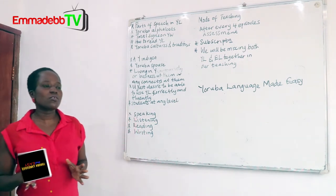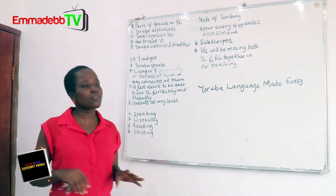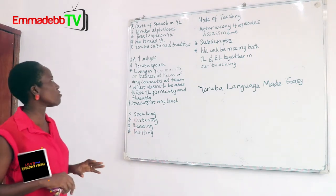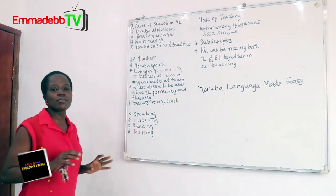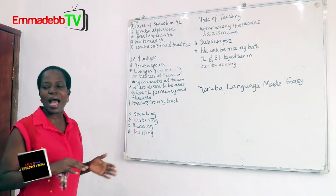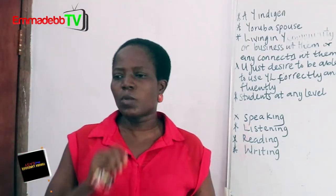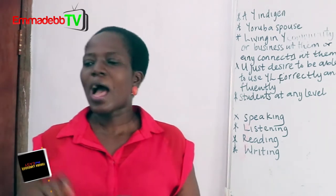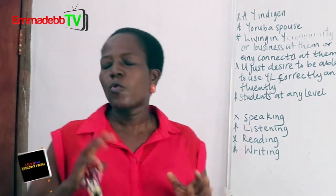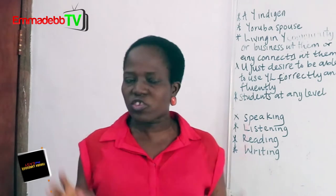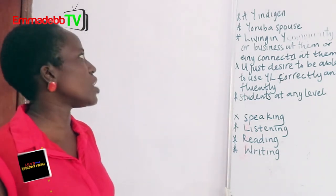Part of the things we are going to be teaching ourselves include the Yoruba parts of speech, the Yoruba alphabet, and tonal signs. We call them Ami in Yoruba language. When we write Yoruba language, we normally put Ami. There are three of them, and we are going to be learning them when we get to that section.